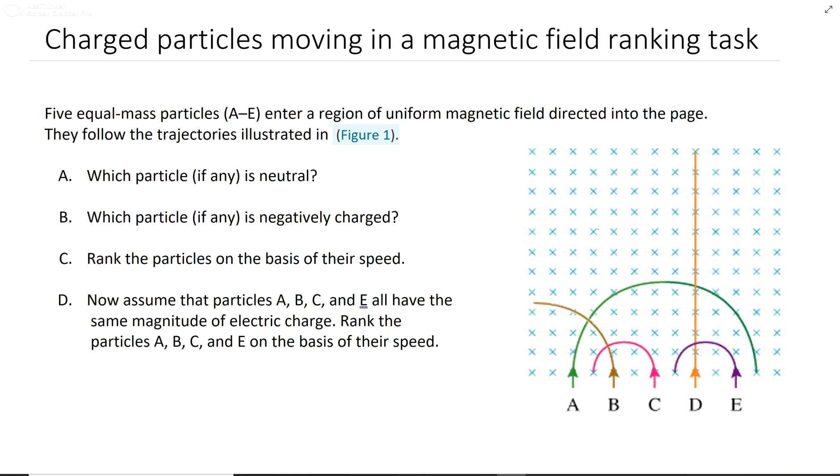This is charged particles moving in a magnetic field and this is a ranking task because the last part of it is ranking. So given these things, we're asked about the charges of them, and then ranking them twice.